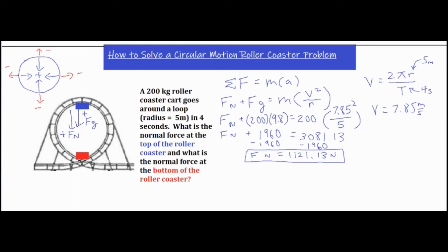For the bottom of the roller coaster, we already did a lot of the work. The big difference is that Fg still points down as usual, but now the seat is pushing upwards perpendicular against the person, so Fn points upward — centripetal, towards the center of the circle — and Fg now faces away from the center, making it a negative force. So the only difference in setting up the second part is that Fg is negative, which will change our final answer. We already solved for velocity, so we set up the equation with negative Fg and solve for the second normal force.